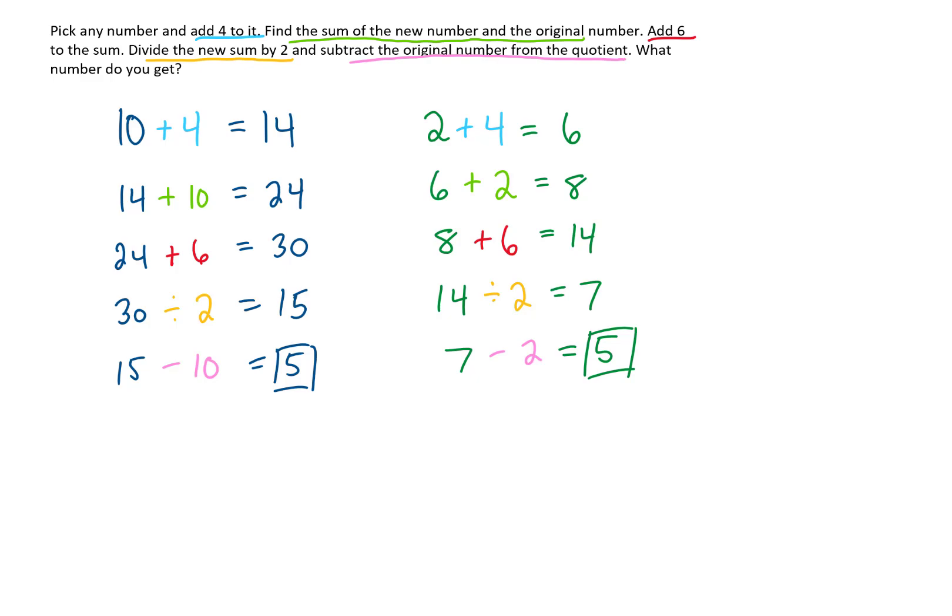So you might do this process a couple more times, and you might use inductive reasoning to come up with a hypothesis that if you go through this process with any starting number, you're going to end up with the number 5. You may try this several times and not be able to come up with a counterexample. So your next step would be to use deductive reasoning to prove this hypothesis.